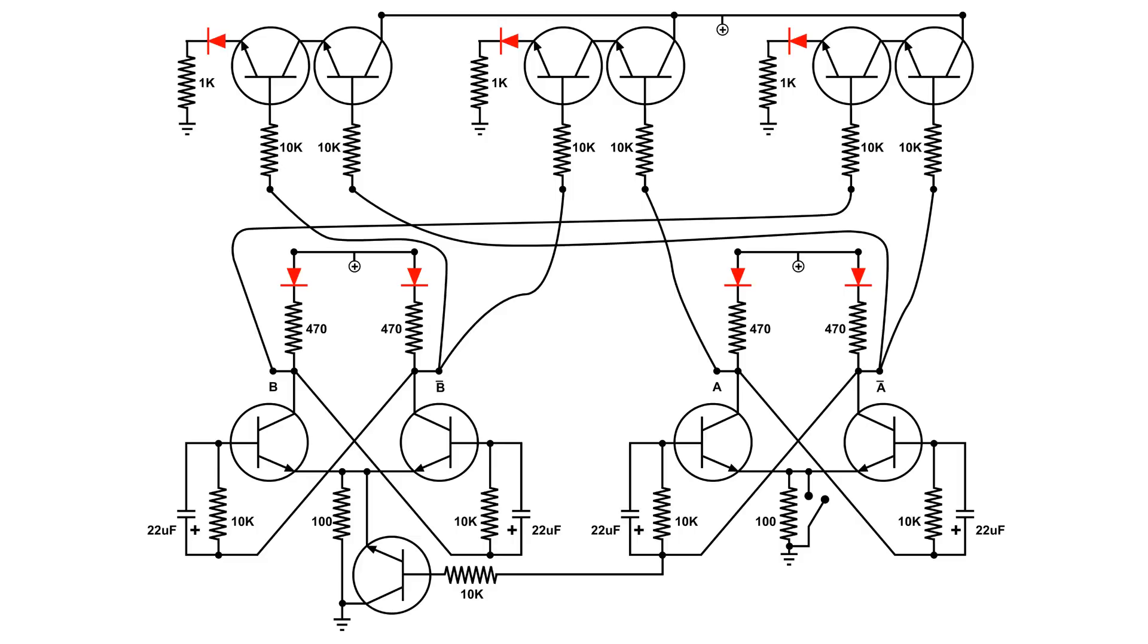Now, what the A and NOT A means, or the B and NOT B means is, let's say A is lit. Well, NOT A means it's NOT lit. Or if A is NOT lit, then NOT A is lit. So I think we just went around in a circle here, but we really didn't. It takes a little while to get used to Boolean algebra.